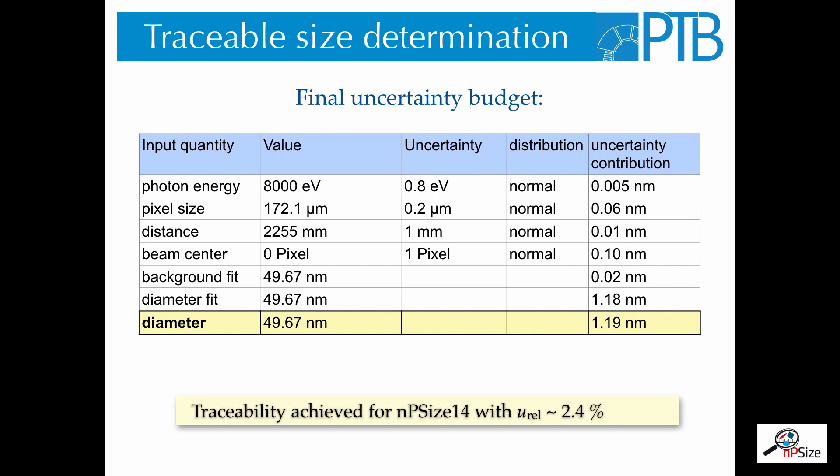In the end, we get the uncertainty budget that was already shown in the first slide. We have determined the uncertainty of photon energy, pixel size, and distance. From the fitting procedure, we get uncertainties for the beam position, the background, and the diameter. And these all add up to an uncertainty in this case of 1.2 nanometers, which means that we have achieved traceability for NP-size 14 with a relative uncertainty of 2.4%.